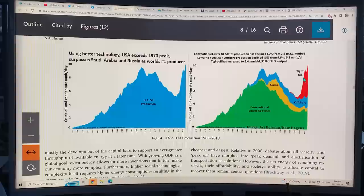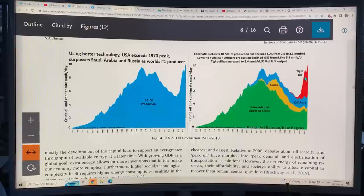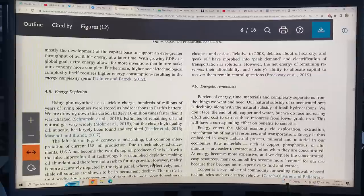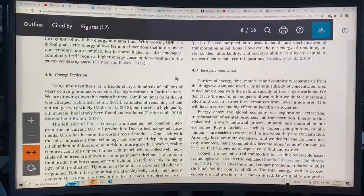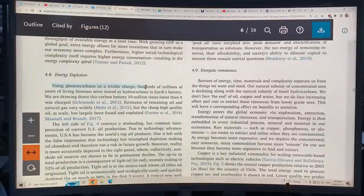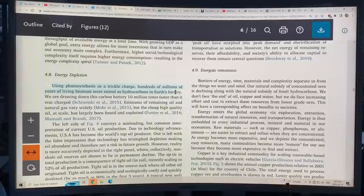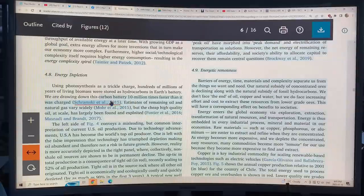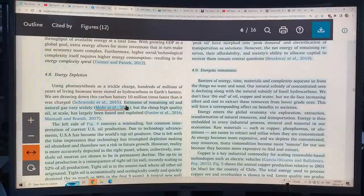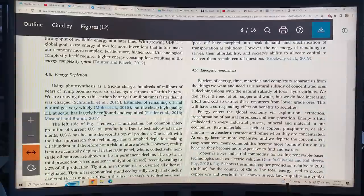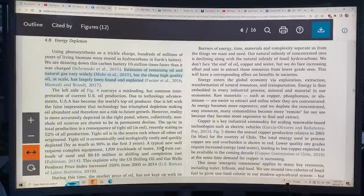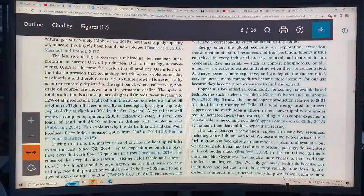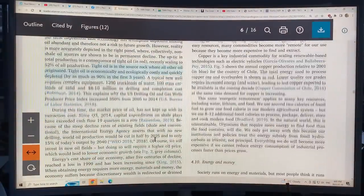And when you make the tight oil, you can extract it from a given site for about two or three years, then you have to go drill another hole and find it. So it's very, very tough to maintain this sort of thing. So how did the energy get in the fossil fuels? Well, it was from photosynthesis. It's a trickle charge. Hundreds of millions of years of living biomass were stored as hydrocarbons in Earth's battery. And now we're drawing down this carbon battery 10 million times faster than it was charged. Estimates of remaining oil and natural gas vary widely, but the cheap, high-quality oil at scale has largely been found and exploited. All the low-hanging fruit is gone. The tight oil is in source rock and it's very quickly depleted by as much as 90% in the first three years.